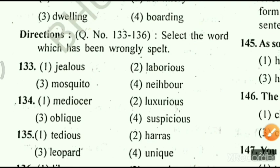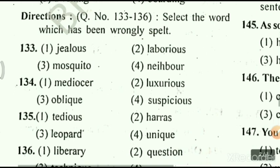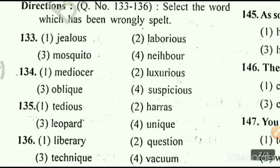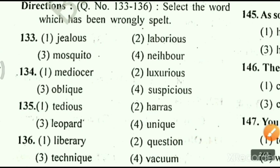The right spelling for neighbor is N-E-I-G-H-B-O-U-R. Our next question is 134. Options are: mediocre; option 2, luxurious; option 3, oblique; option 4, suspicious. Our answer is option 1, mediocre. Right spelling for mediocre is M-E-D-I-O-C-R-E.